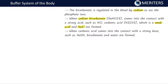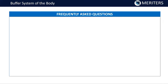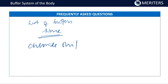Bicarbonate is regulated in the blood by sodium, as are the phosphate ions. When sodium bicarbonate comes in contact with a strong acid such as HCl, carbonic acid (a weak acid) and NaCl are formed. When carbonic acid comes in contact with a strong base such as NaOH, bicarbonate and water are formed. Remember the list of buffers in different systems, the time taken — renal takes days, respiratory takes minutes, and chemical buffers take only seconds. Learn what the chloride shift is and how hemoglobin acts as a buffer.